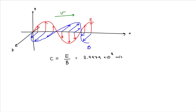For the electromagnetic wave in this problem, we are given that the amplitude of the magnetic field is 4.00 times 10 to the minus 11 Tesla. We are also given that the frequency of oscillation is 120 gigahertz. Using this information, we have to find the amplitude of the electric field and the wavelength of the electric field.